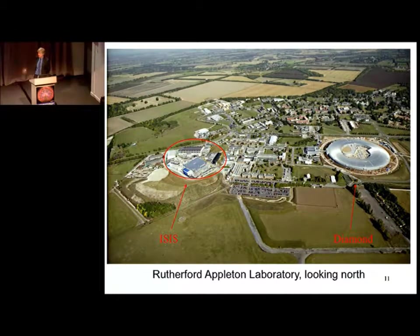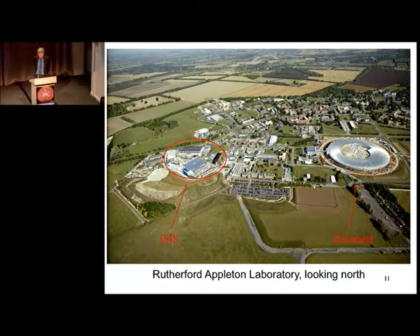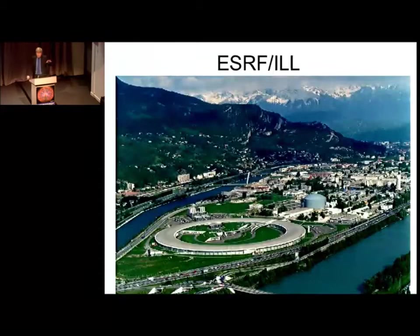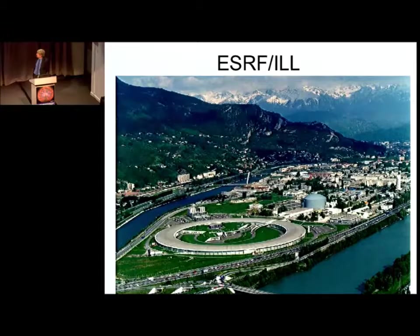ISIS produces neutrons via an accelerator slamming protons into a lump of metal. The protons hit other nuclei, which then bubble out neutrons that are captured and used downstream. We also support facilities not just in this country but at CERN, where we have a major stake, and also the European Synchrotron Radiation Facility and the Institut Laue-Langevin neutron facility. I'll explain in a minute why we need a ring for synchrotron radiation.